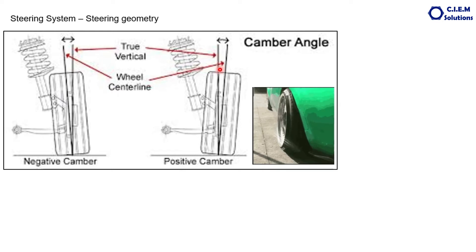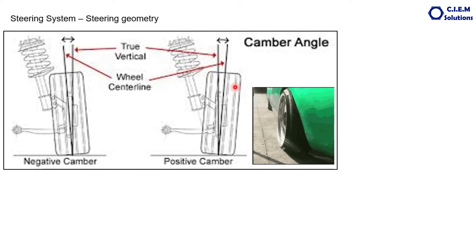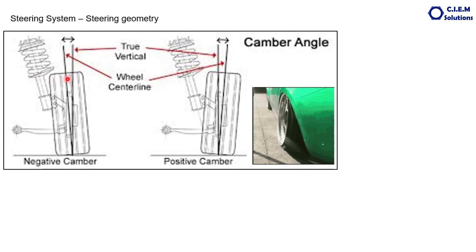Some vehicles will have positive camber and some vehicles will have negative camber. If the wheels or tyres lean outwards at the top, it is called positive camber. If the tyres lean inwards, it is called negative camber. Generally, the recommended camber angle is 2 to 3 degrees.